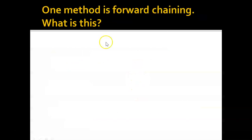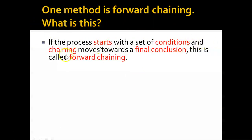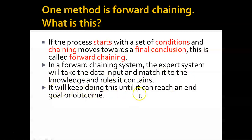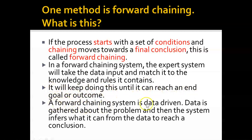One method is forward chaining. If the process starts with a set of conditions and moves towards a final conclusion, that is forward chaining. The expert system takes data input and matches it to the knowledge and rules it contains, continuing until it reaches an end goal or outcome. A forward chaining system is data-driven — data is gathered about the problem and the system infers what it can from the data to reach a conclusion.